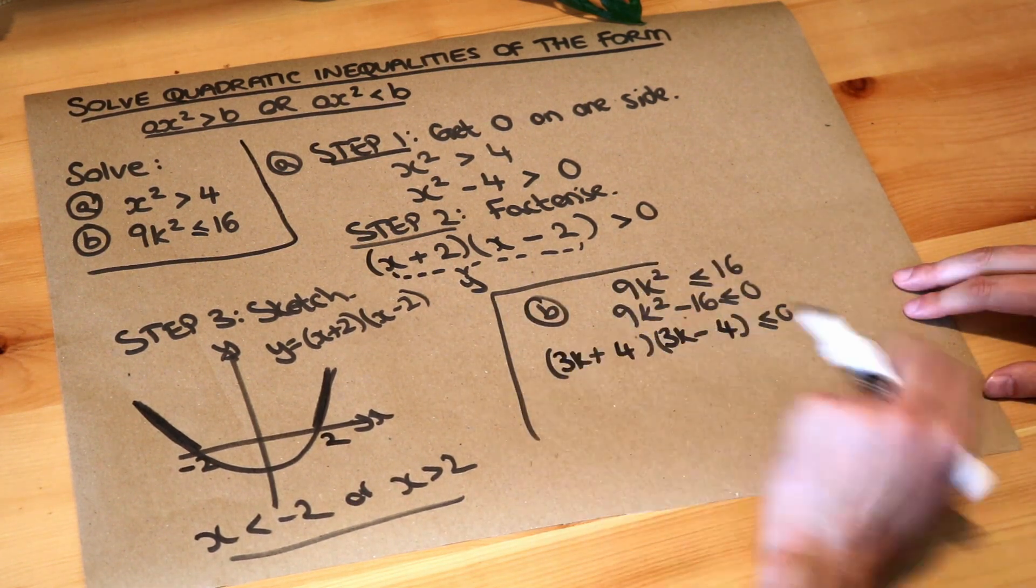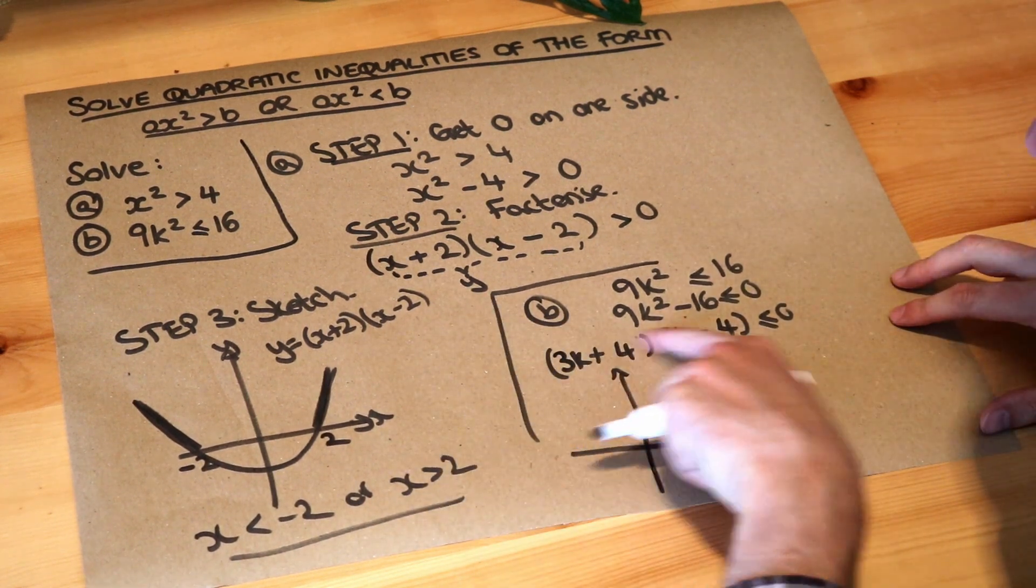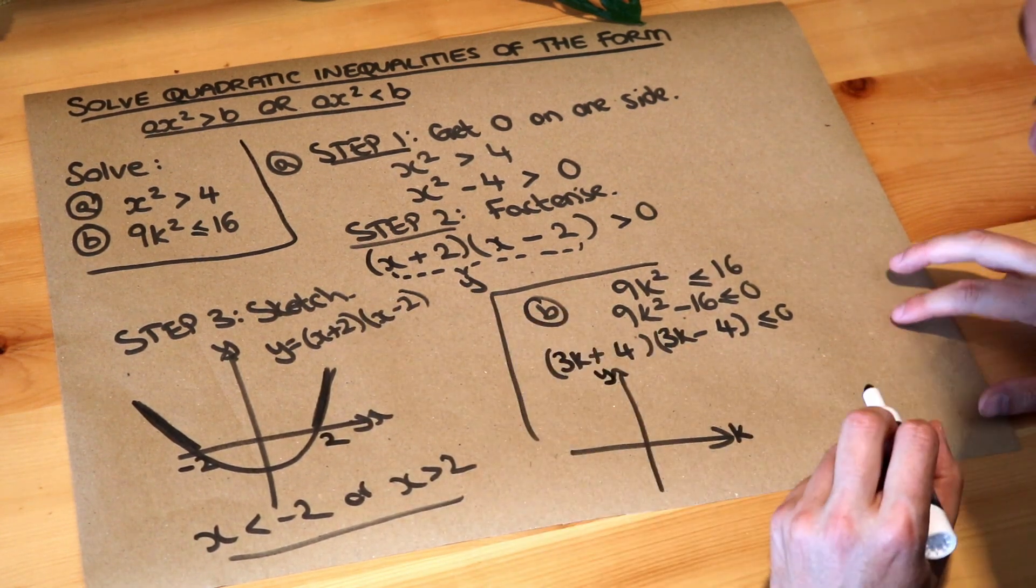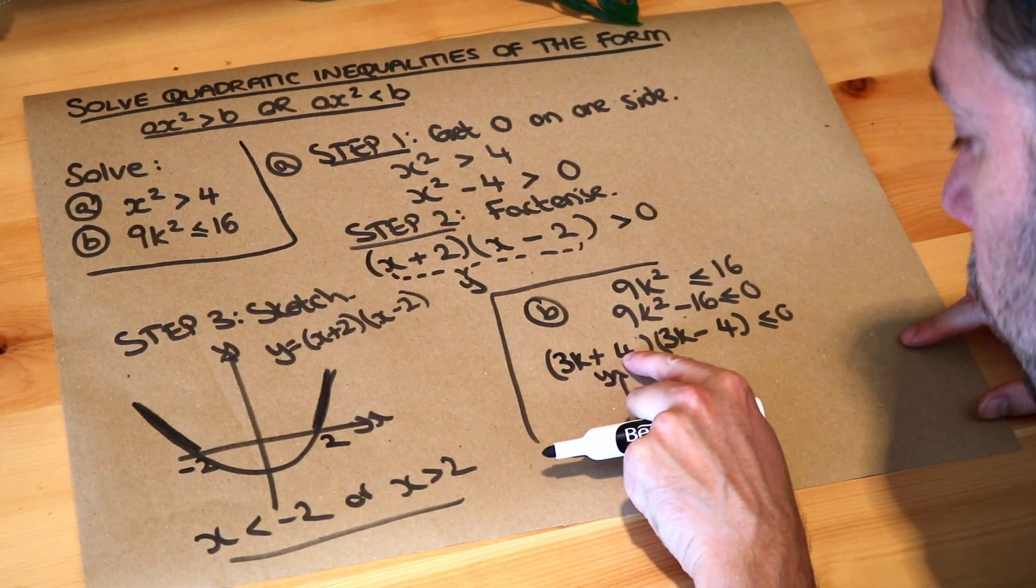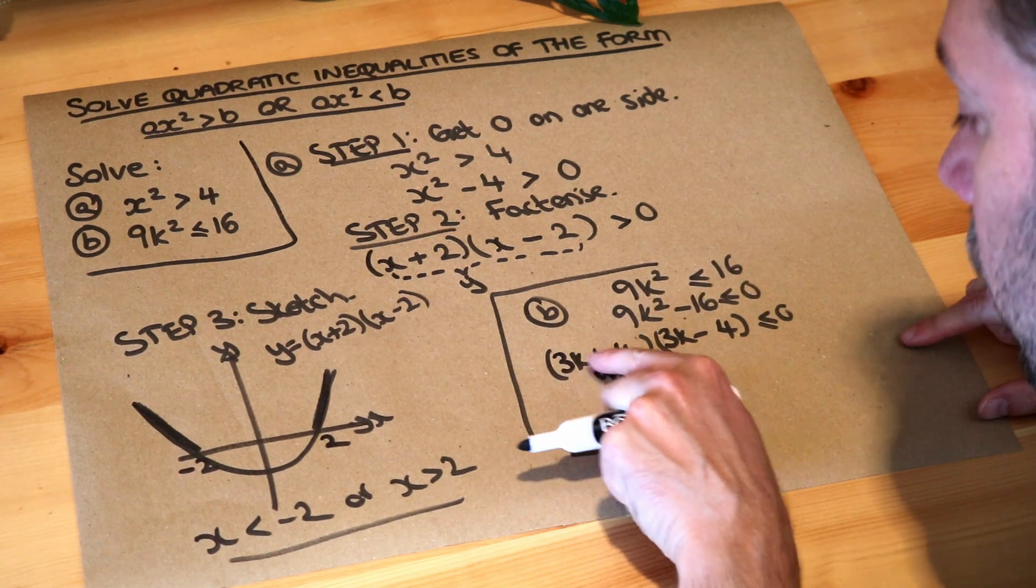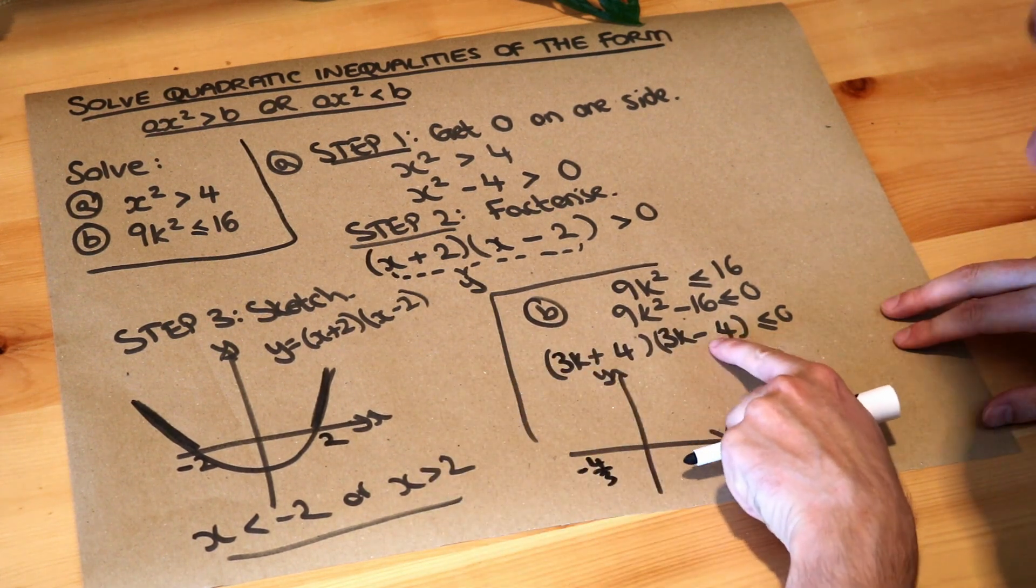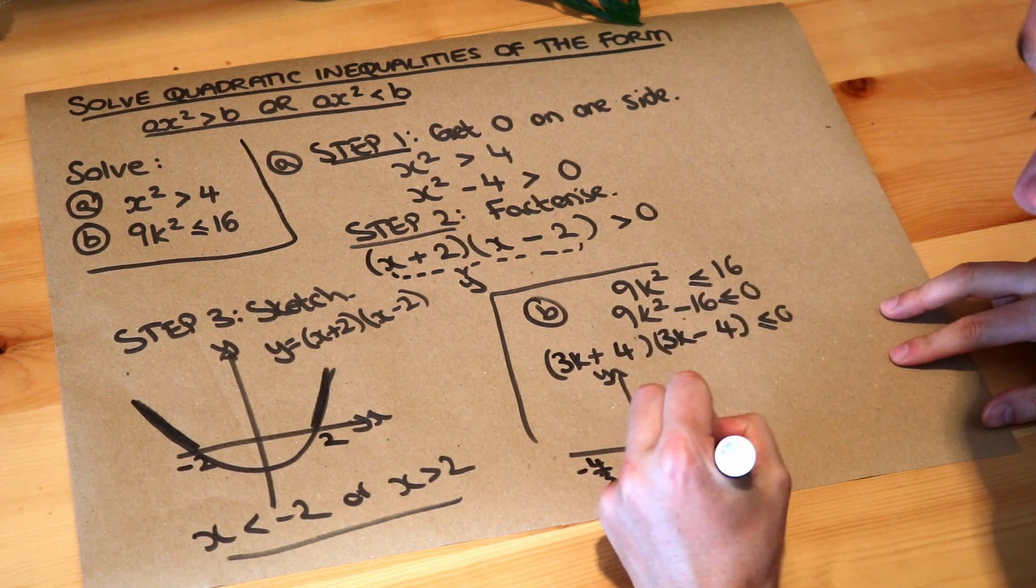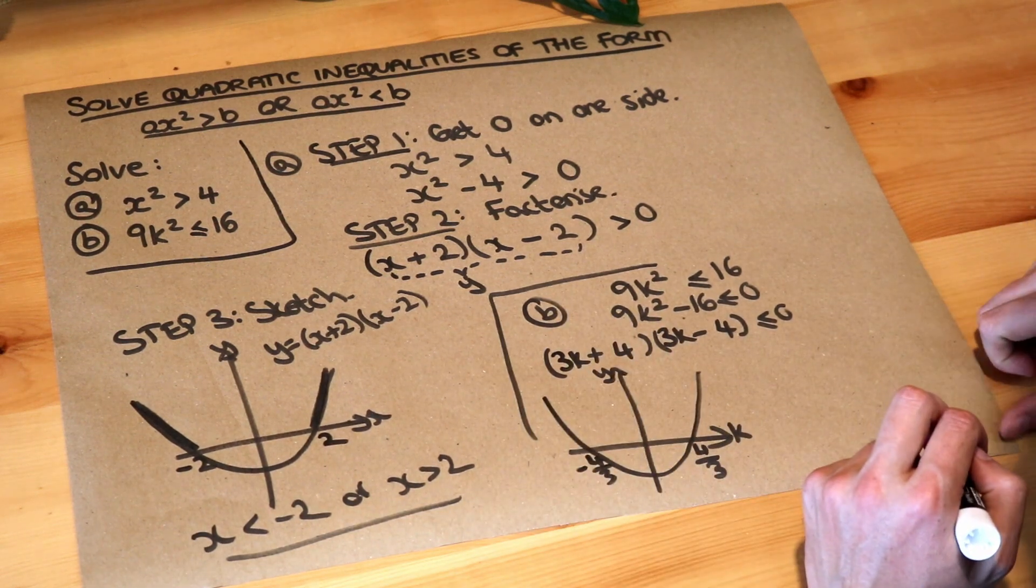So we've now got this factorized form, and again we sketch it. But this time, because it's in terms of k rather than in terms of x, this is actually the k-axis and this is still the y-axis. And we do as we did before. We negate that number, so that becomes minus 4, but actually we also have to divide by the number from the k, so it's minus 4 over 3. And then we do the same here: we negate that number there, so it's positive 4 over 3. And if that's not clear to you, then watch my videos on sketching quadratics first, please.